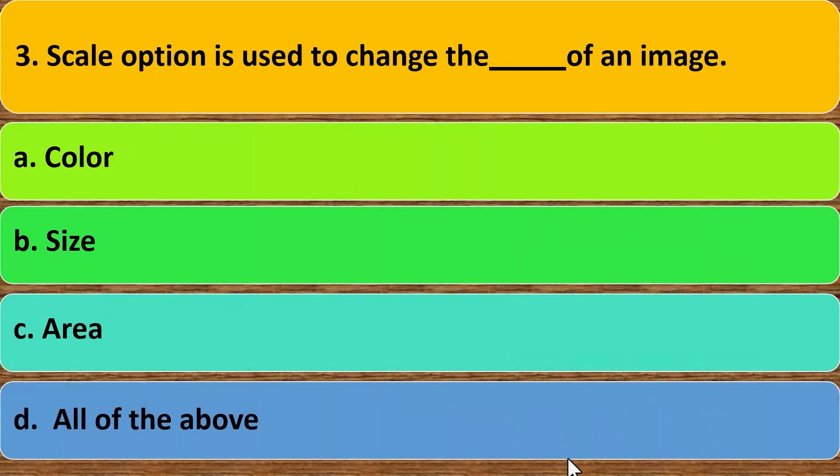Third, scale option is to change the dash of an image. A. Color. B. Size. C. Area. D. All of the above. B. Size.